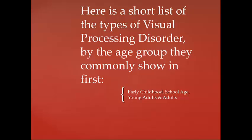Here is a short list of the types of visual processing disorders by the age group they commonly show in first: early childhood, school age, young adults, and adults.